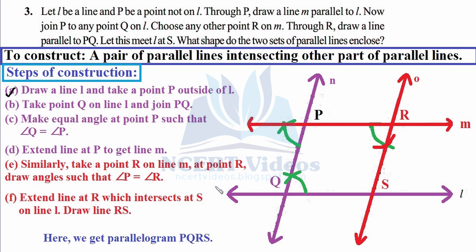Part B: take point Q on line l and join PQ, naming the segment with small n. You can take any point Q since you need a transversal to work with. Join P and Q with a ruler. Now we are going to construct equal angles at P and Q to establish parallelism. The steps for making equal angles are already known from previous work.